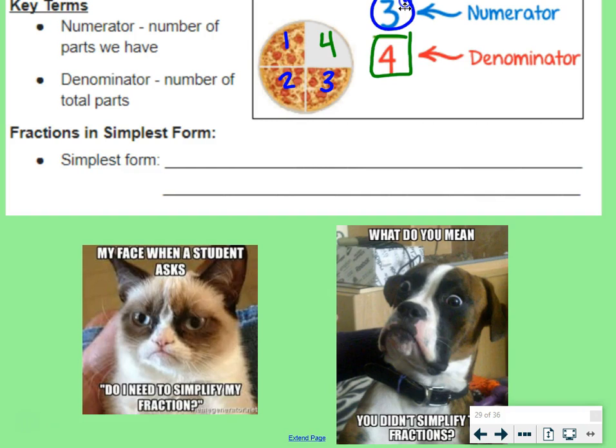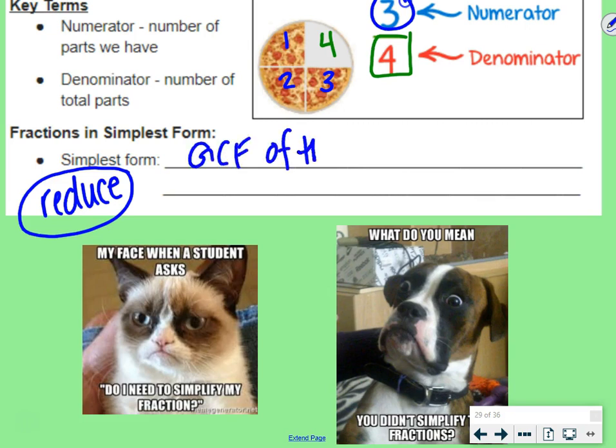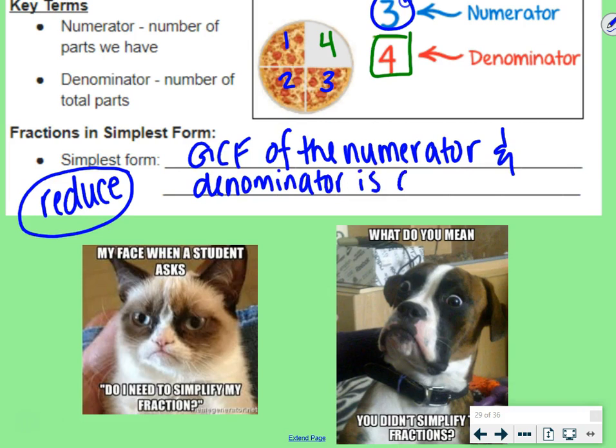Fractions in simplest form. We also call this reducing fractions. So if you see the word reduce your fraction or simplify your fraction, that just means the greatest common factor of the numerator and denominator is 1. So once the greatest common factor of the numerator and denominator is 1, that means it's in simplest form. If the greatest common factor is not 1, then it needs to be simplified or reduced.